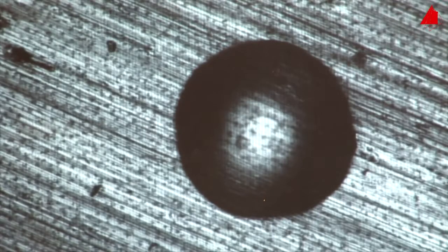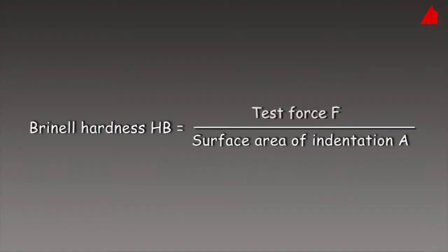That's it! The testing machine can now calculate the Brinell hardness. The hardness value is defined as test force F in the old unit kilopond divided by the area of the indentation A in square millimeters.